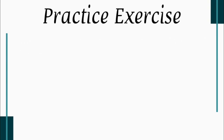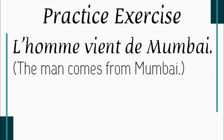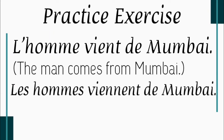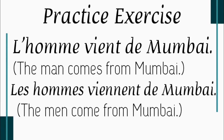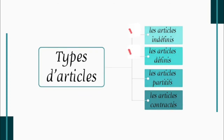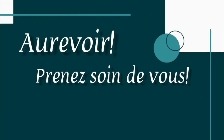Fourth sentence: l'homme vient de Mumbai — the man comes from Mumbai. Plural: les hommes viennent de Mumbai — the men come from Mumbai. The verb 'venir' is conjugated according to the subject. So, we have covered two categories of articles: les articles indéfinis and les articles définis. We will continue with the other two categories in our next video. Till then, keep revising French. Au revoir. Prenez soin de vous. Take care of yourself. Bye bye.